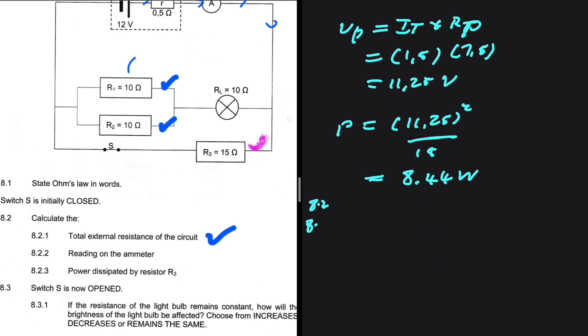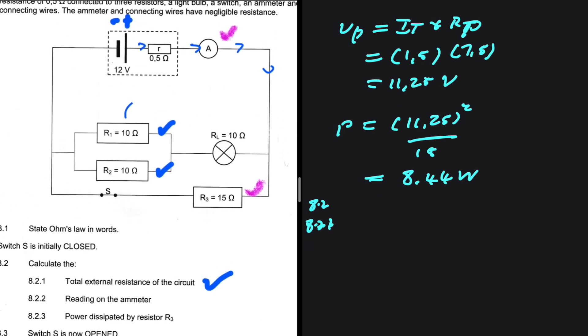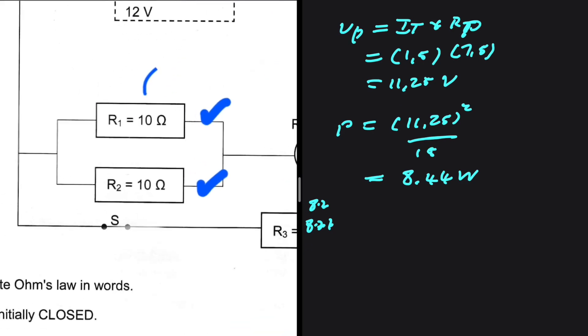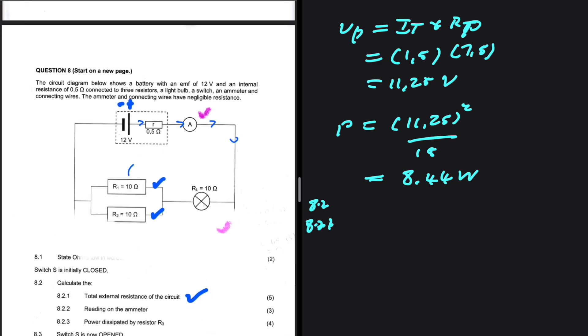8.3. 8.3.1. Switch S is now opened. So let's go ahead and open switch S. If we open switch S, this resistor R3 is no longer taking part in our circuit. So that other path is non-existent, basically.